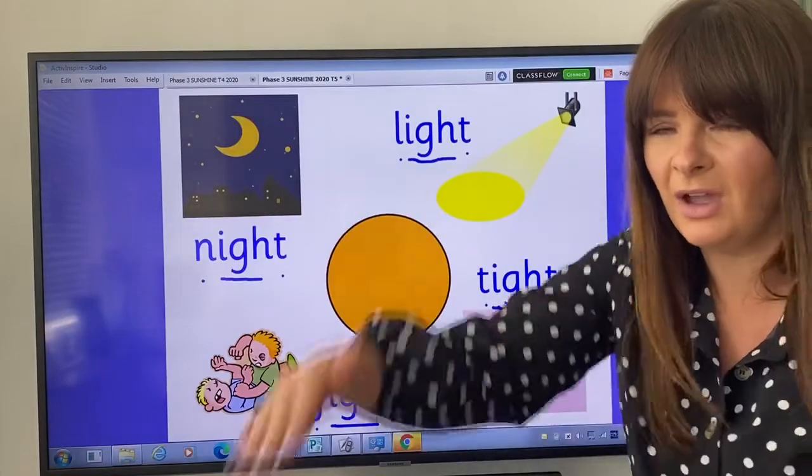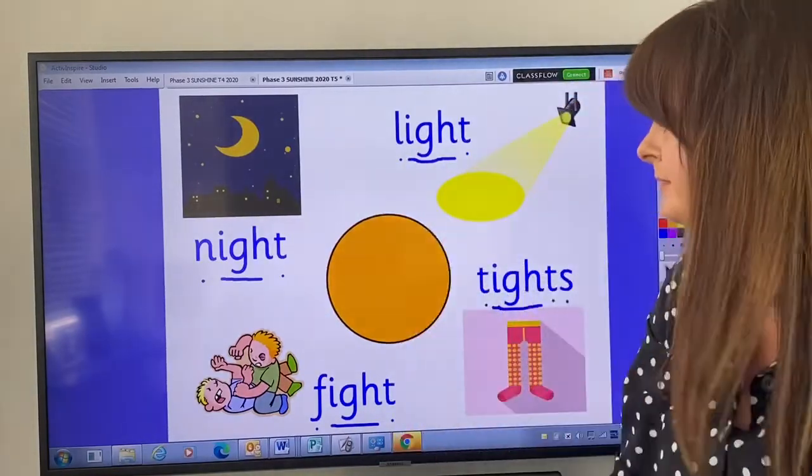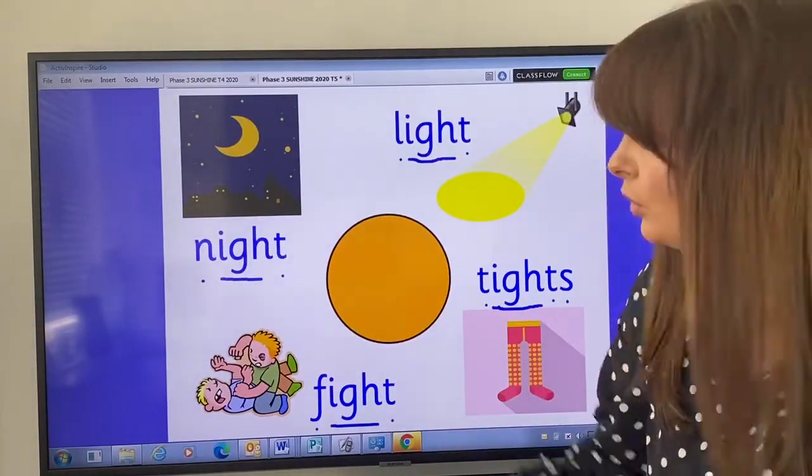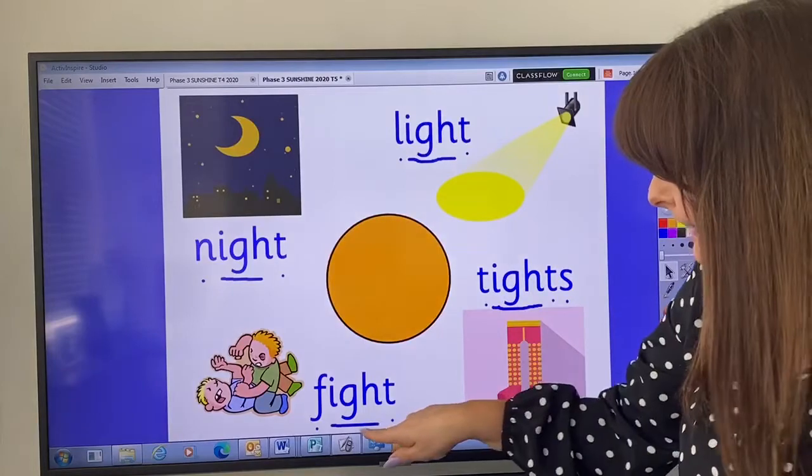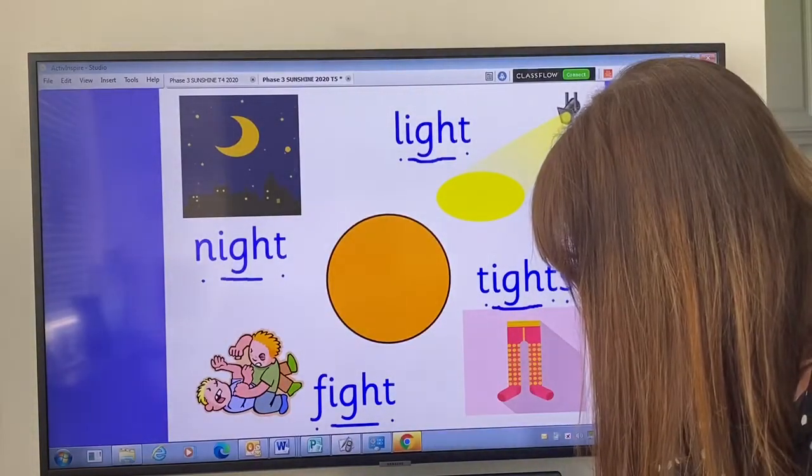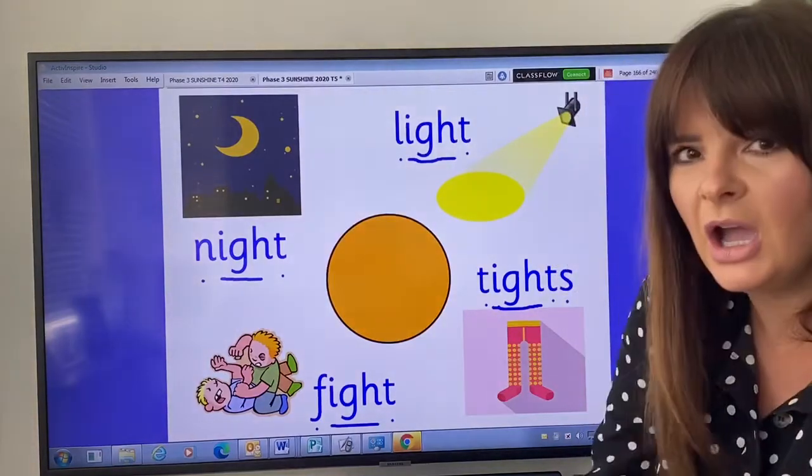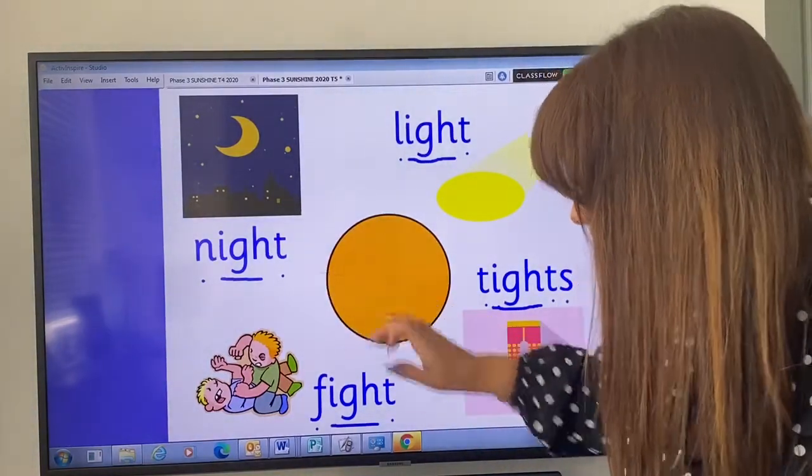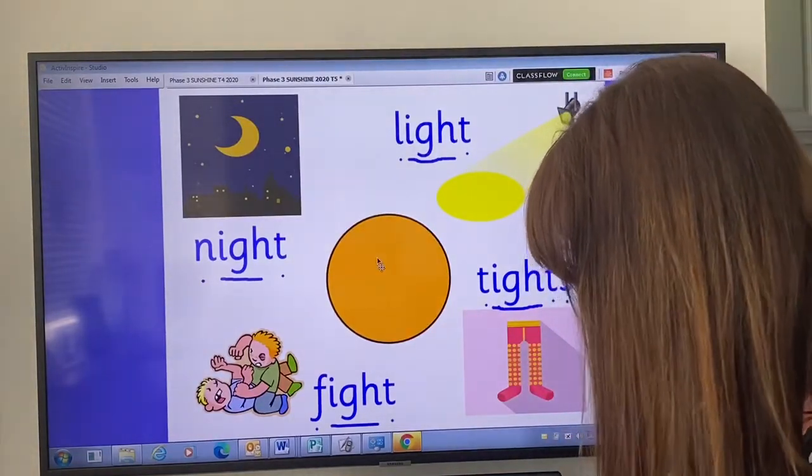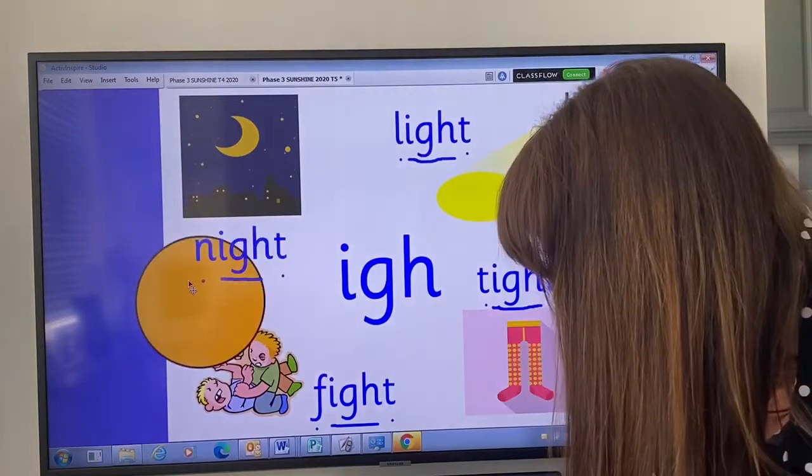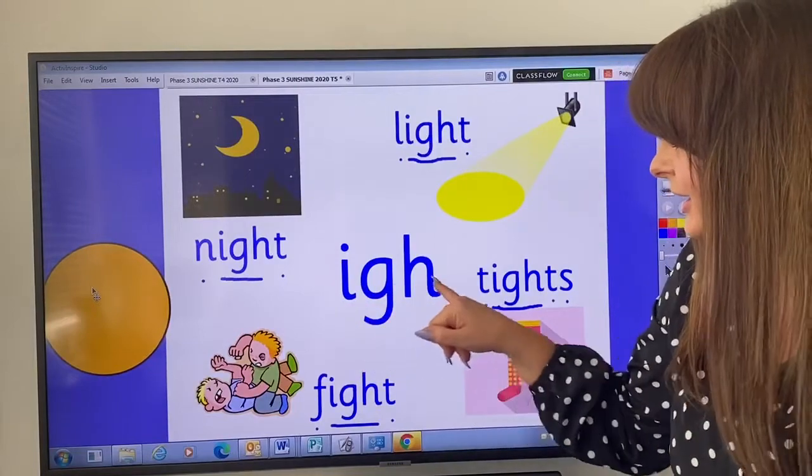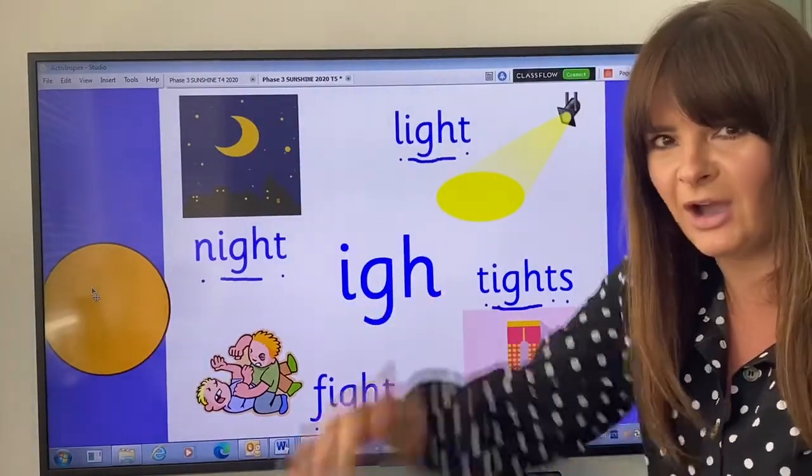Which letters can we see in the middle of all of these words? That's right, you can see an i, a g, and an h. Let's have a look. Oh! It won't move because it's not interactive. That's me pretending I'm at school. Hang on, let's, I've moved it on the laptop. What am I like? Okay, so we've got the i-g-h. I-g-h, i.